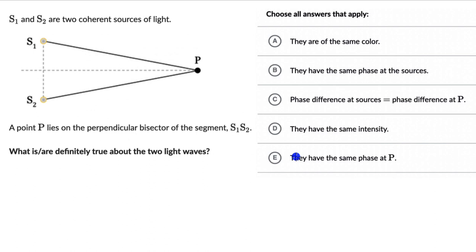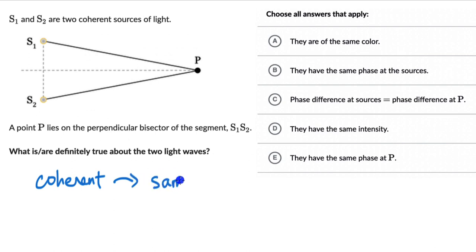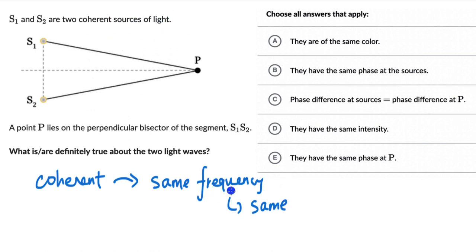Let's get into this. We have two coherent sources of light — what could that really mean? Two coherent sources means the two sources have the same frequency, which means they have the same wavelength because they are all sources of light traveling with the speed of light. So if they have the same frequency, they must have the same wavelength, and that means the color of the light must be the same.